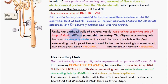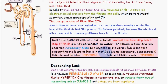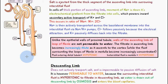Unlike the epithelial walls of the proximal tubule, the walls of the ascending limb of the loop of Henle are not permeable to water. So the filtrate in the ascending limb becomes increasingly dilute as it ascends to the cortex. While the fluid surrounding the loop of Henle in the medulla becomes increasingly concentrated, the filtrate becomes more dilute. The fluid entering the distal tubule is called hypotonic, and the interstitial fluid in the medulla surrounding the loop of Henle becomes hypertonic, or more concentrated.